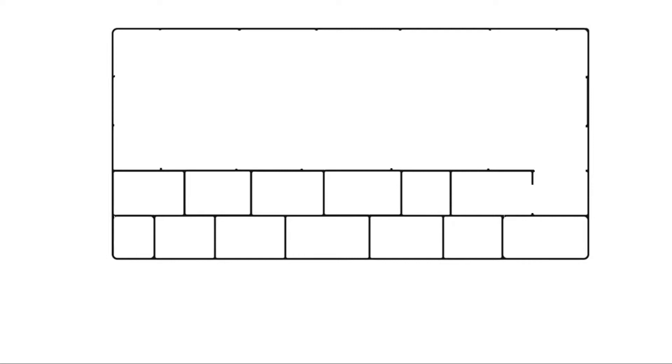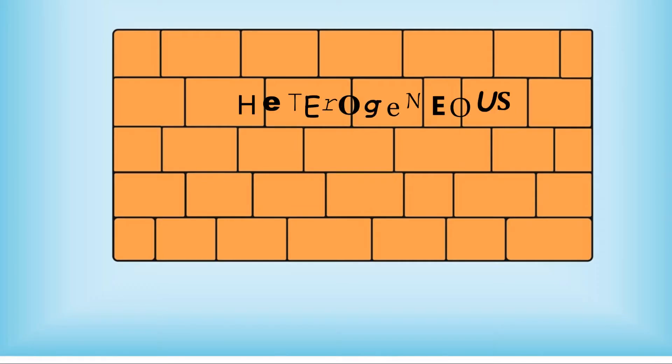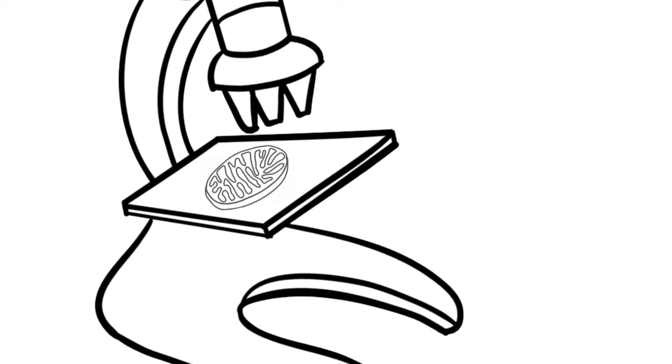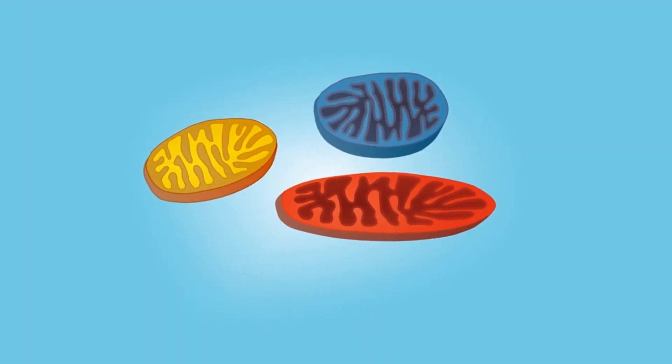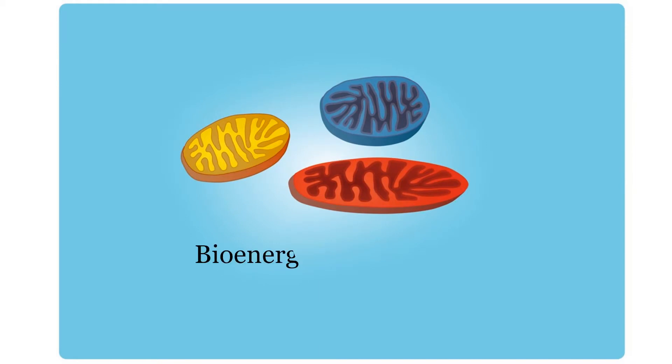There are barriers to developing effective treatments. It is a heterogeneous condition and we don't fully understand how and why it develops in the first place. But there is good evidence from laboratory data and animal models that the mitochondria, which are the powerhouse of the cell, may be impaired, resulting in bioenergetic dysfunction.